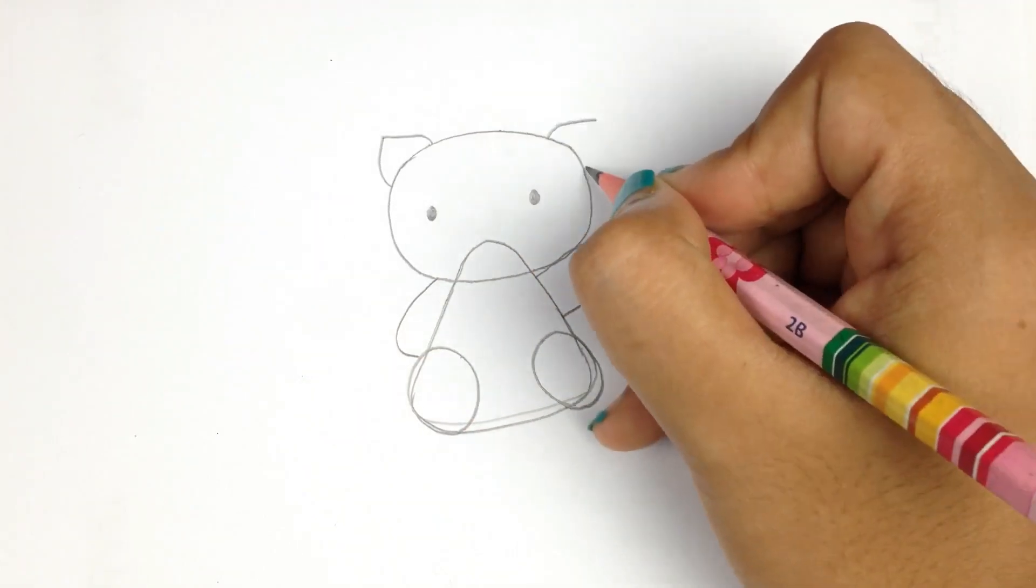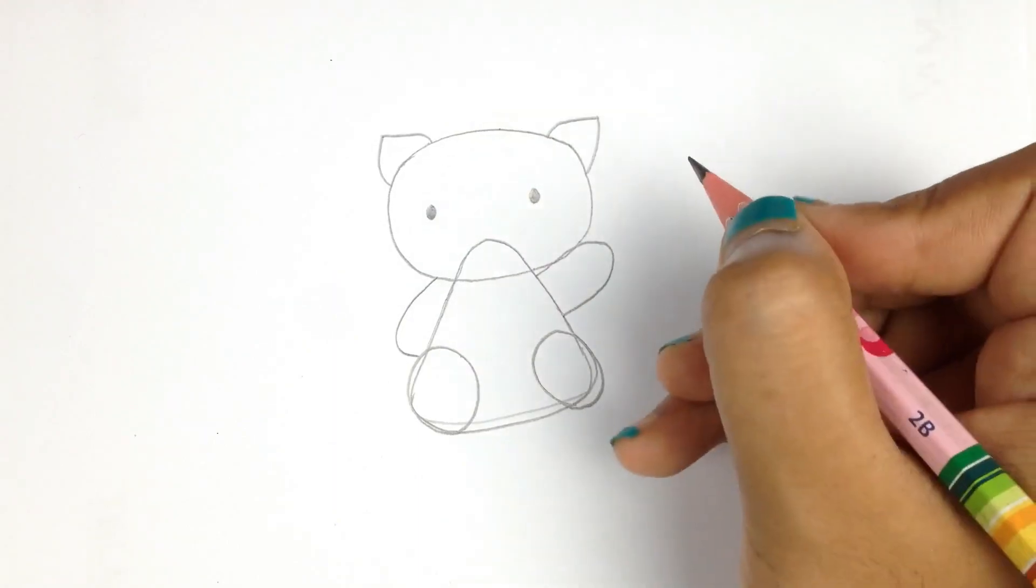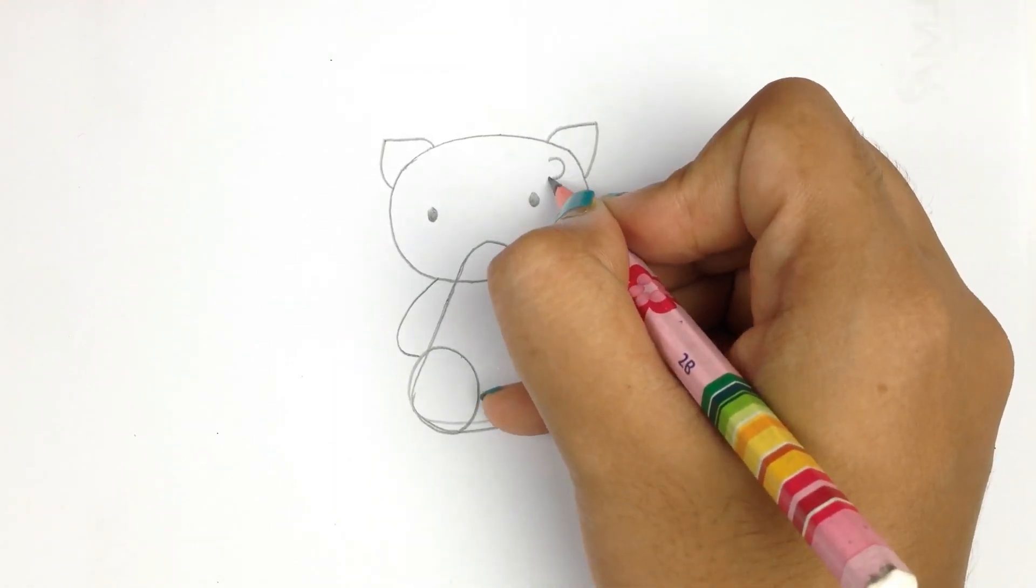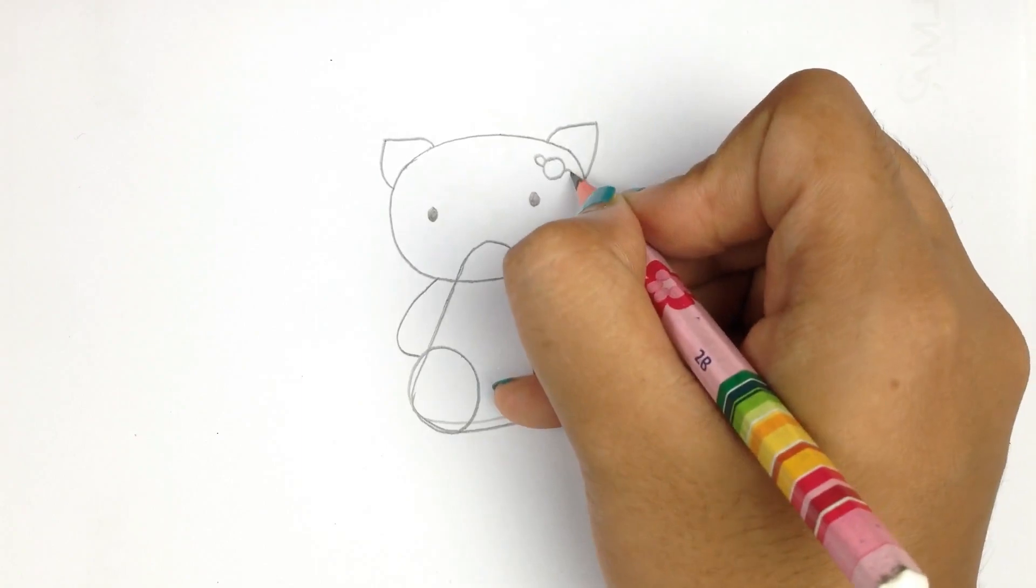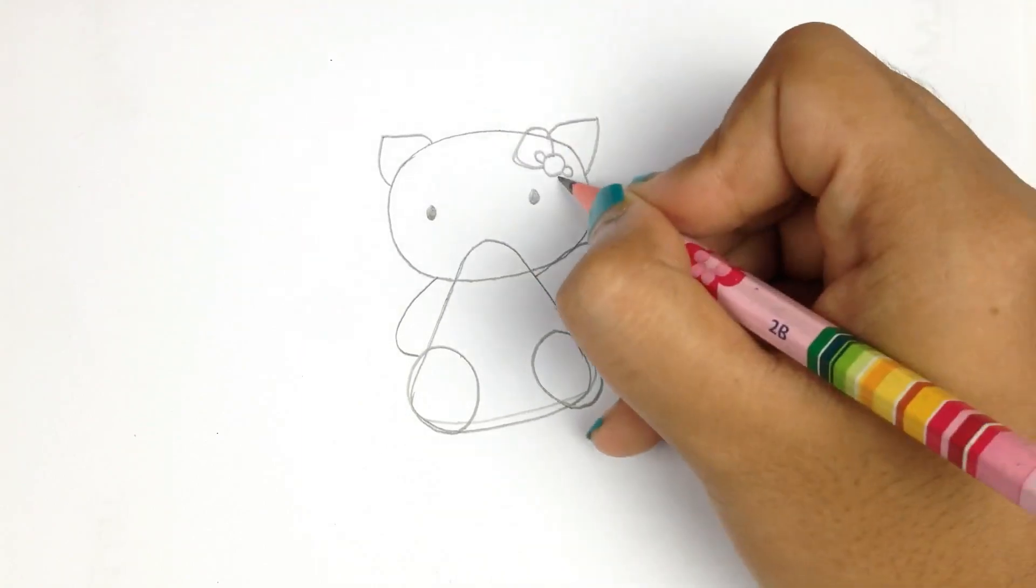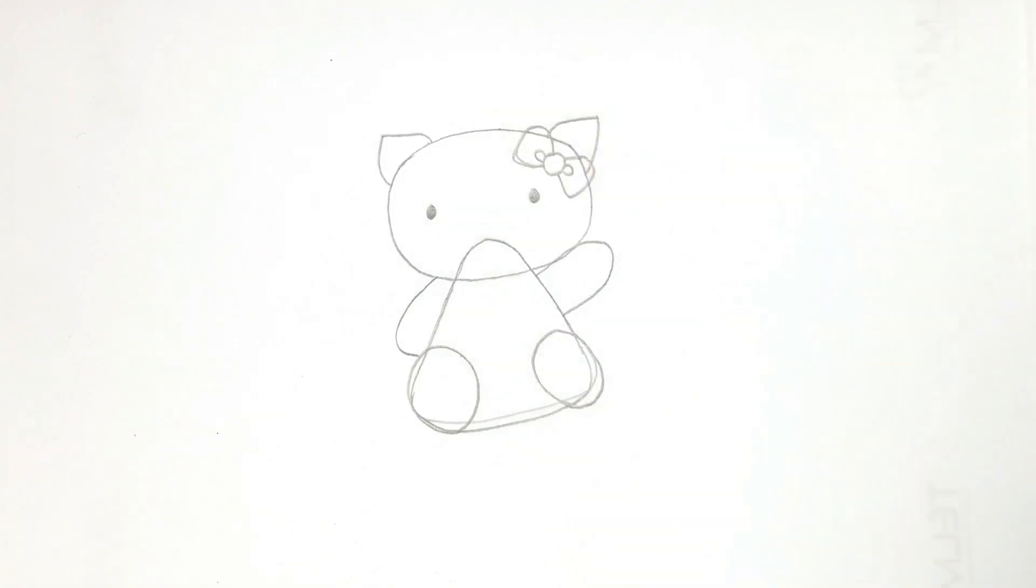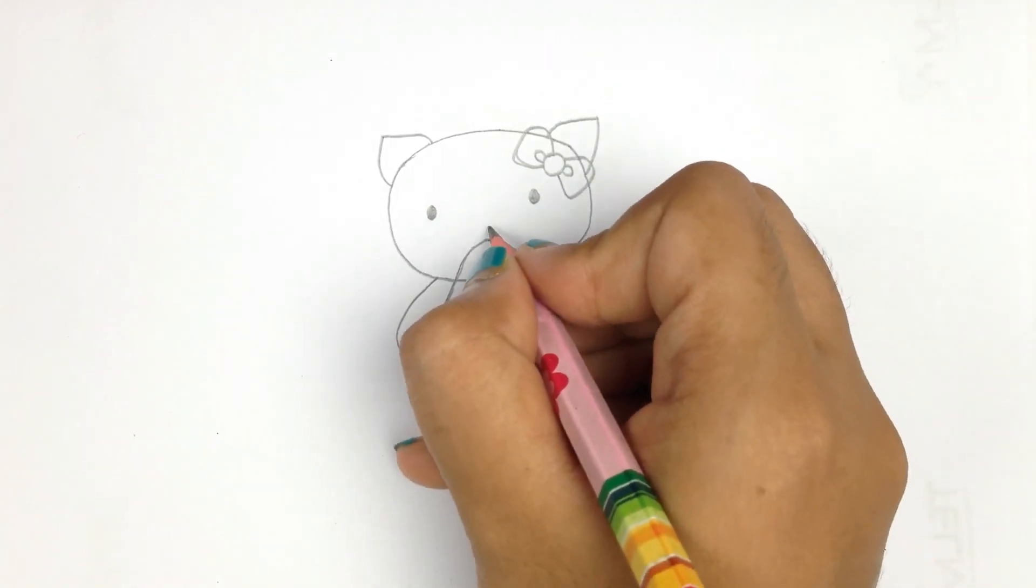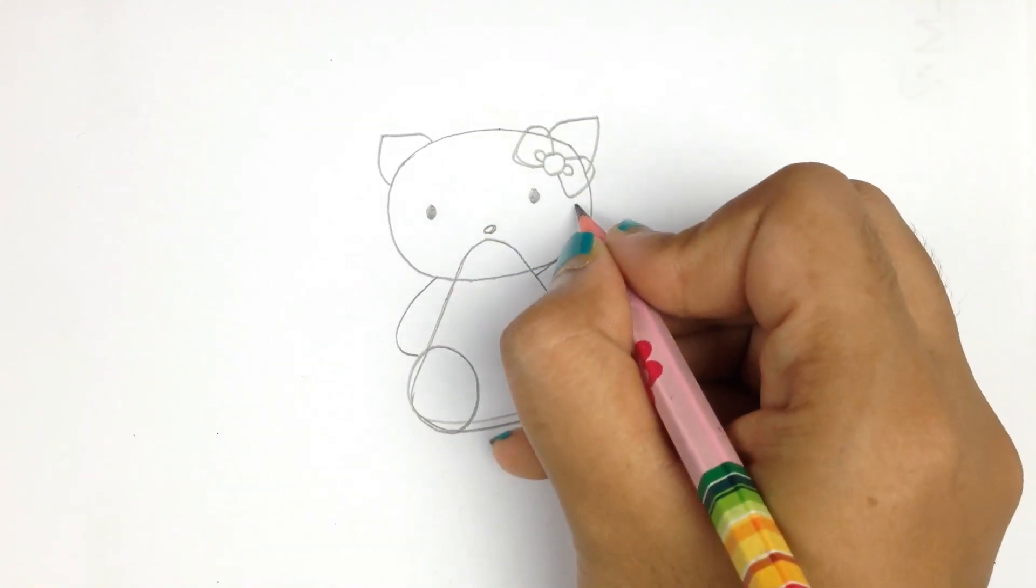And her ears. Hello Kitty always likes to wear a nice bow clip, and here it is. Tiny nose tip.